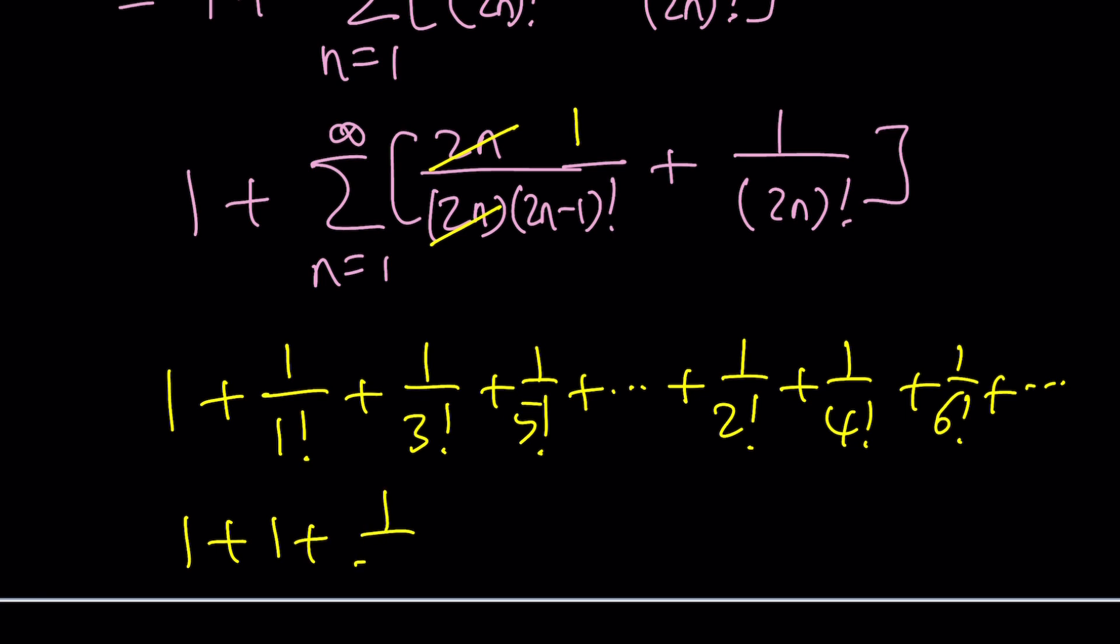And again that gives us the exact same thing: 1 plus 1 plus 1 over 2 factorial plus 1 over 3 factorial plus 1 over 4 factorial. And you can write as many terms as you wish. But at the end this is going to equal e, which is Euler's number one more time.